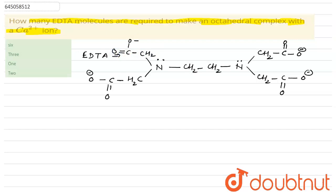Let's see how many donor sites are there. One is this, second is this, third, fourth, fifth and sixth. So there are six donor sites present.